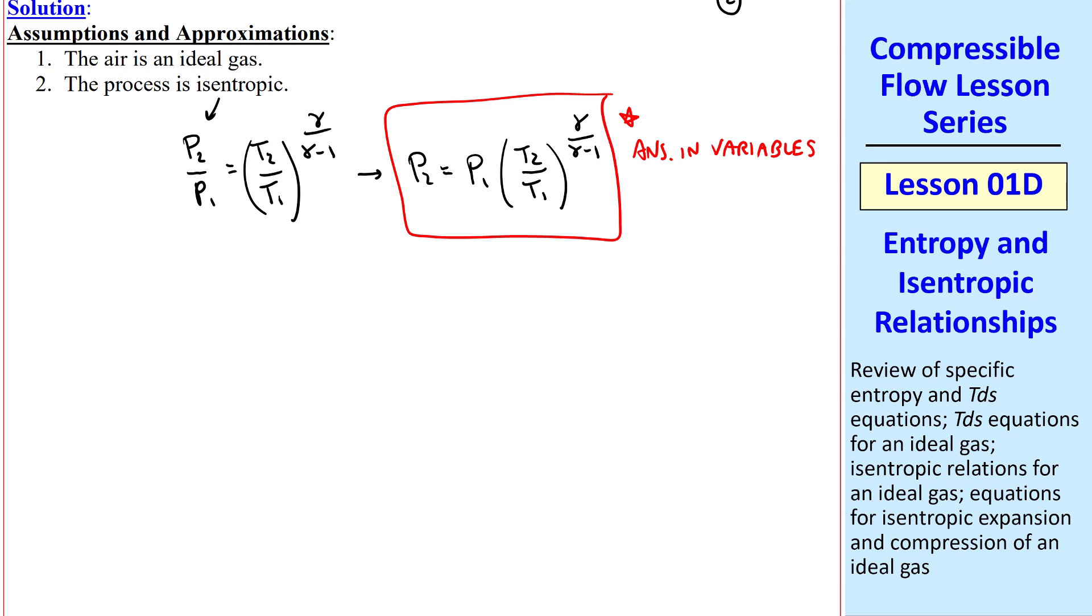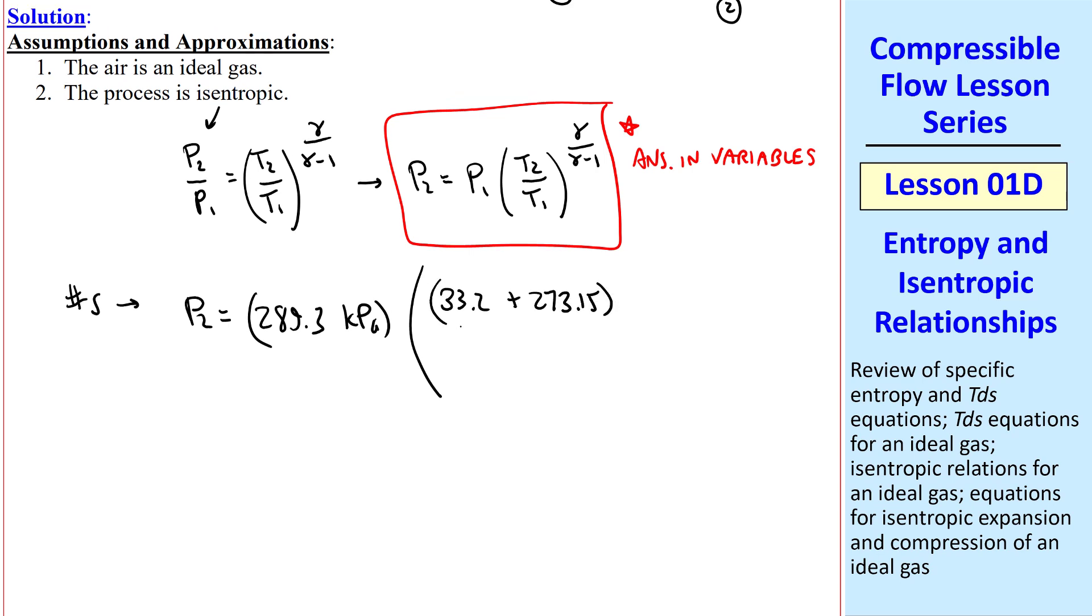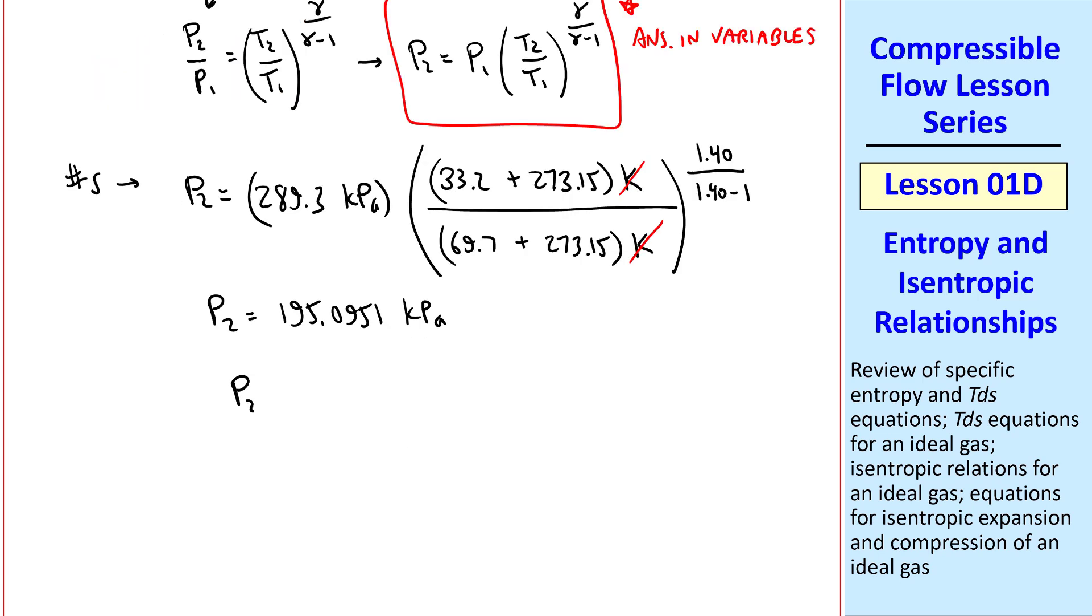Again, I remind the students that it's a good idea to do all your work in variables first, and then plug in the numbers. Here, P2 is equal to P1, which was given, and we must convert our temperatures from degrees C to K, T2 and T1. The K's cancel, of course. And for air, gamma is 1.40, and we get P2 is 195.0951 kPa. In this problem, we're good to about four digits, so I'll give my answer as P2 is 195.1 kPa. Notice, pressure went down in this isentropic expansion.